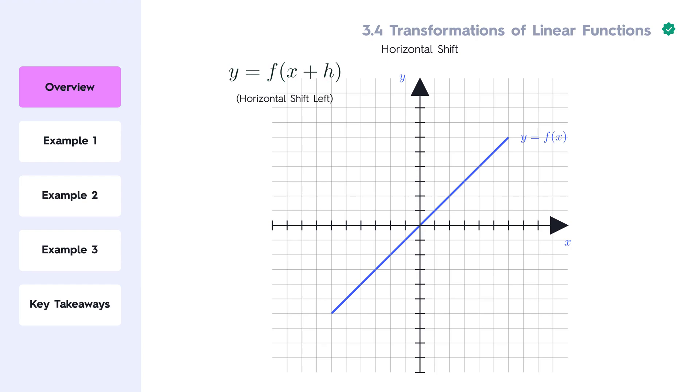Horizontal shift: If we add or subtract a constant inside the function, y equals f of x minus h, the graph shifts left or right by h.